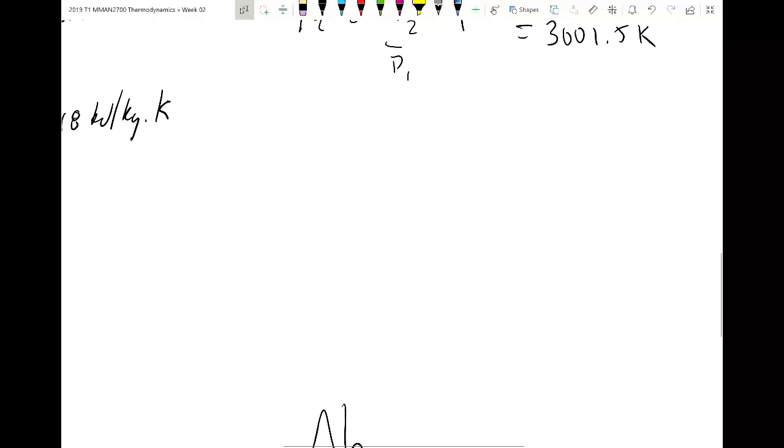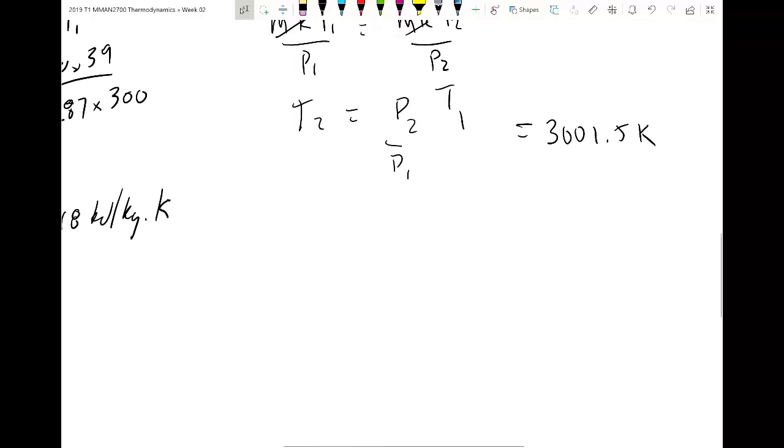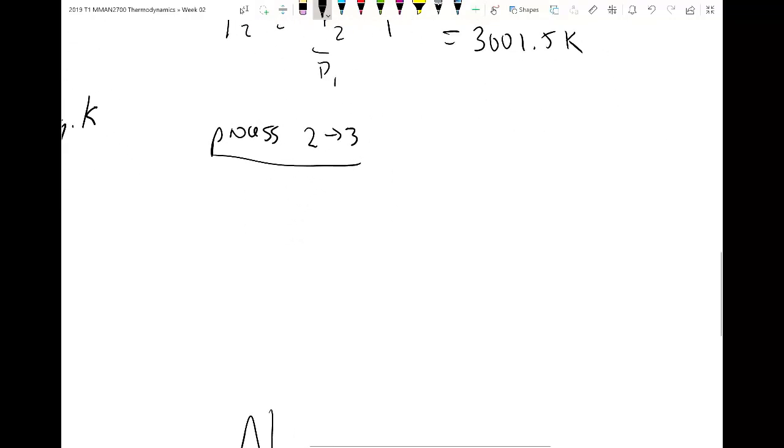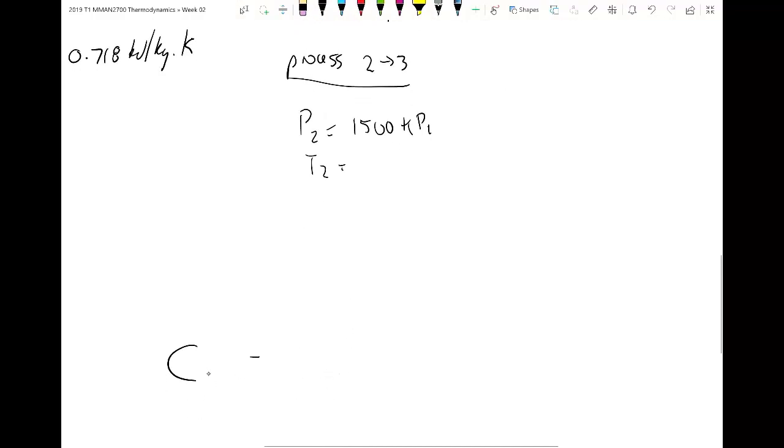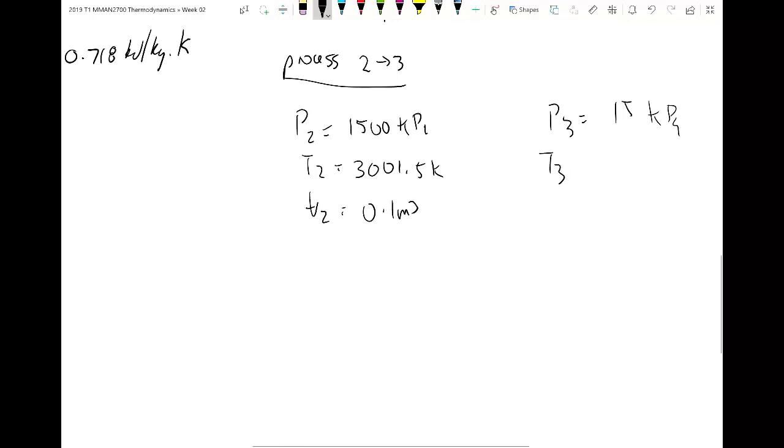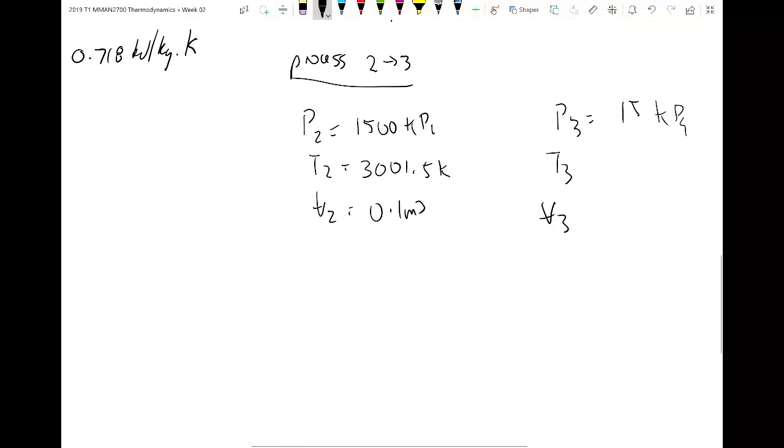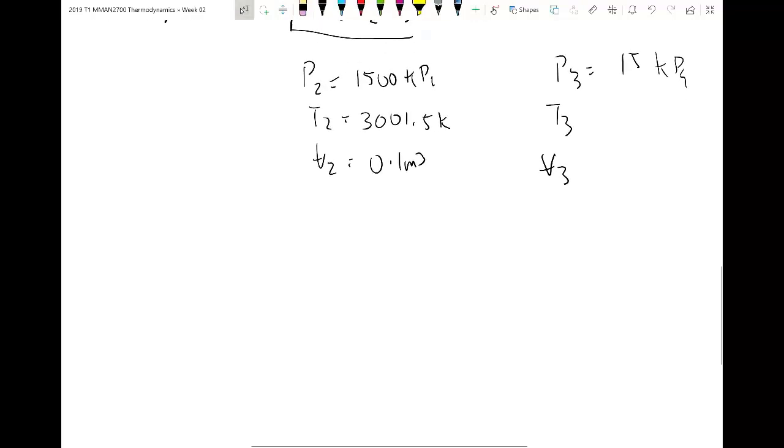Okay, moving on to states 2 to 3, the adiabatic isentropic expansion. We're going to go through a similar process. So starting out with process 2 to 3, and writing the information I know. So I'll just copy the information that I've gotten from my previous calculations. 3001.5 Kelvin. So we know what pressure 3 is, 15 kilopascals. T3, we don't know yet. And we shouldn't know what V3 is yet, either.